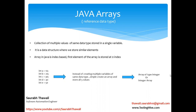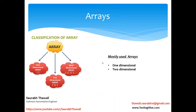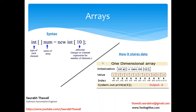It is a data structure where we store similar elements. In Java, an array is index-based — the first element is stored at index 0. Don't worry, in further slides I'll explain exactly what that means. To repeat: whenever we need to store multiple values of the same data type, we store them in a variable called an array. Let's see how arrays work and what this index concept is all about.